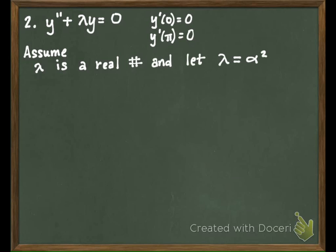That does not necessarily mean that lambda is a perfect square. We had a case where lambda equaled three and so alpha ended up equaling the square root of three. But just for convenience and because it looks easier in the characteristic equation so we don't get a radical, we're going to call it alpha squared.